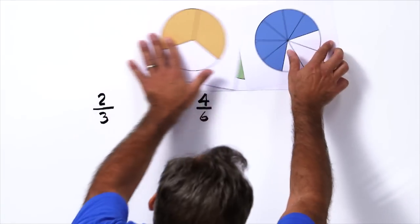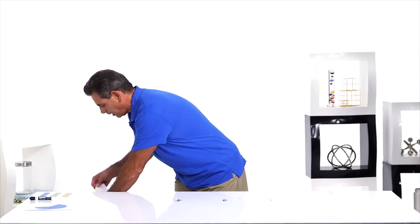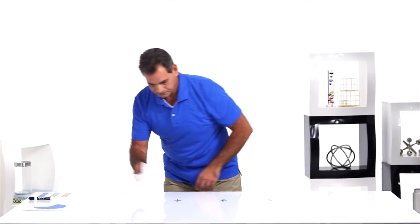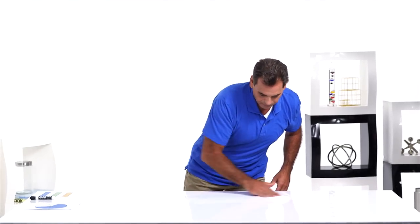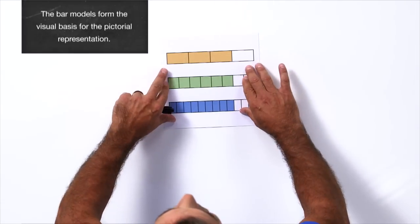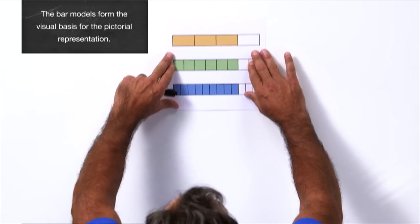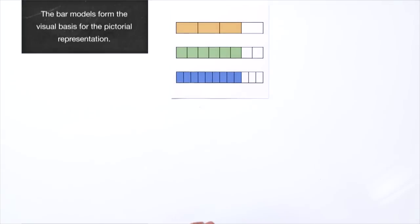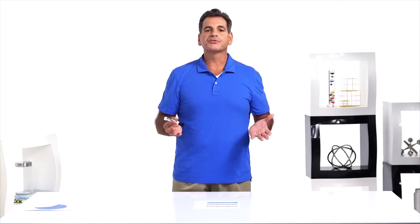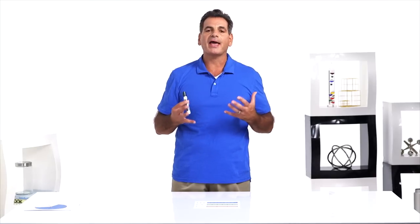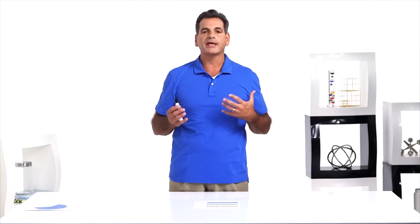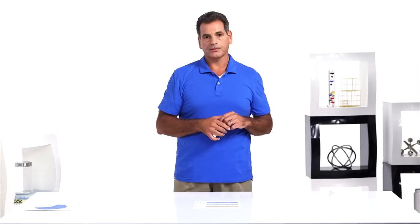Next, show the students another visual model — this one they're not creating, you're just showing it to them. Show three-quarters, six-eighths, and nine-twelfths using bar models, also known as tape diagrams. Ask students to compare the sizes of the fractions and think about how it relates to the activity with the fraction circles.